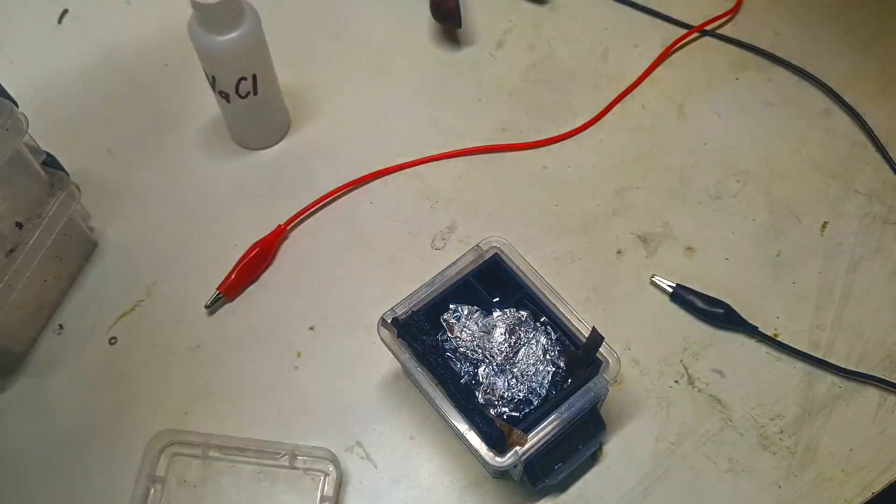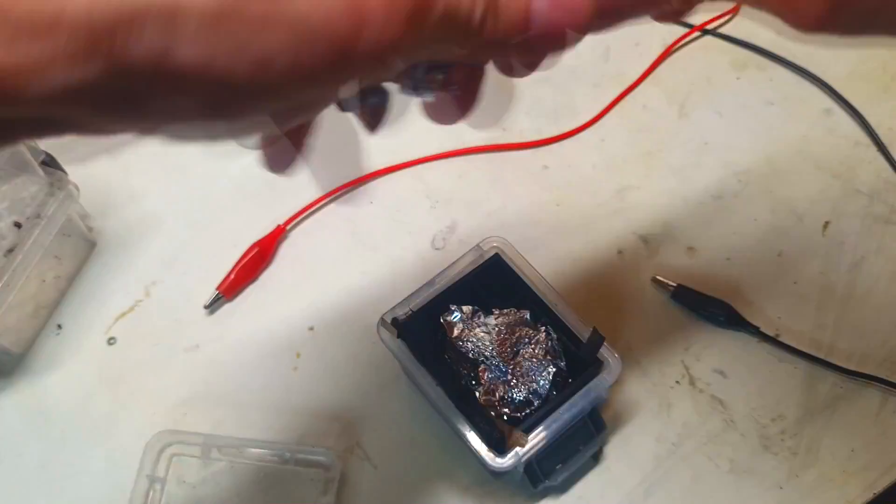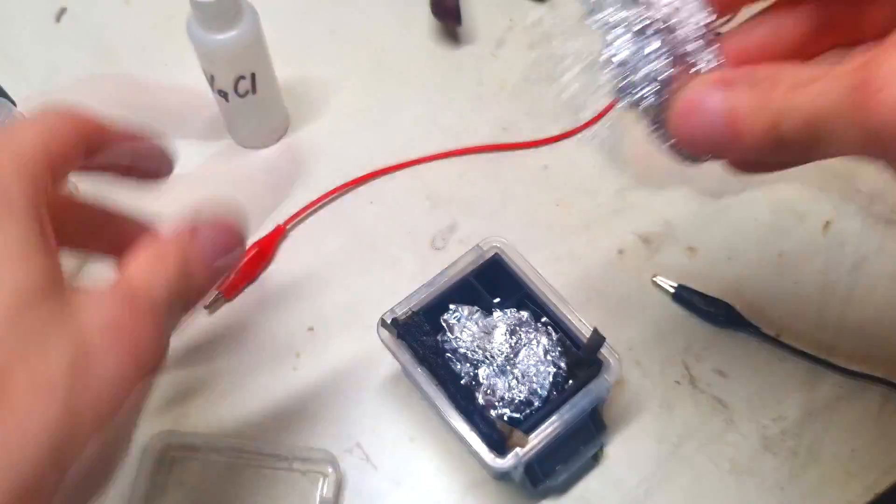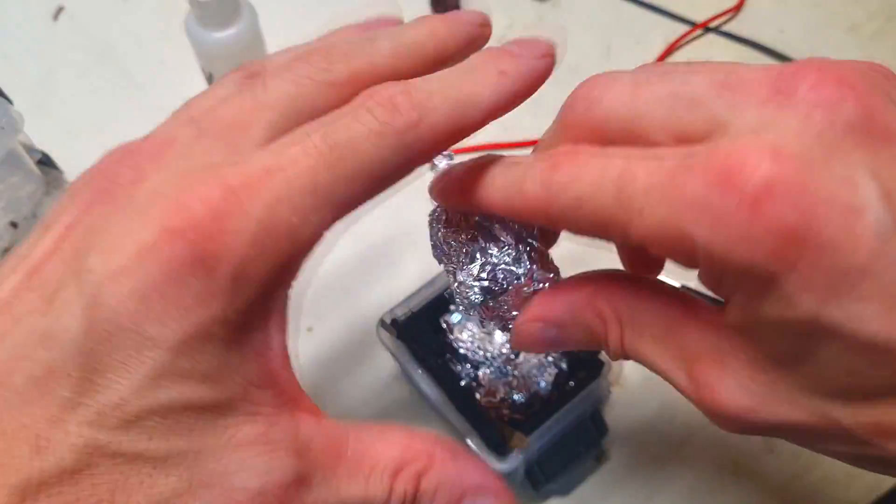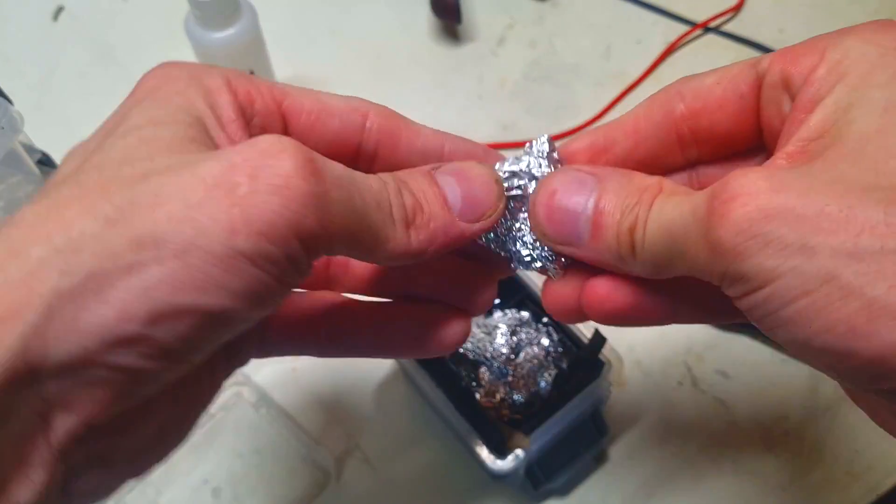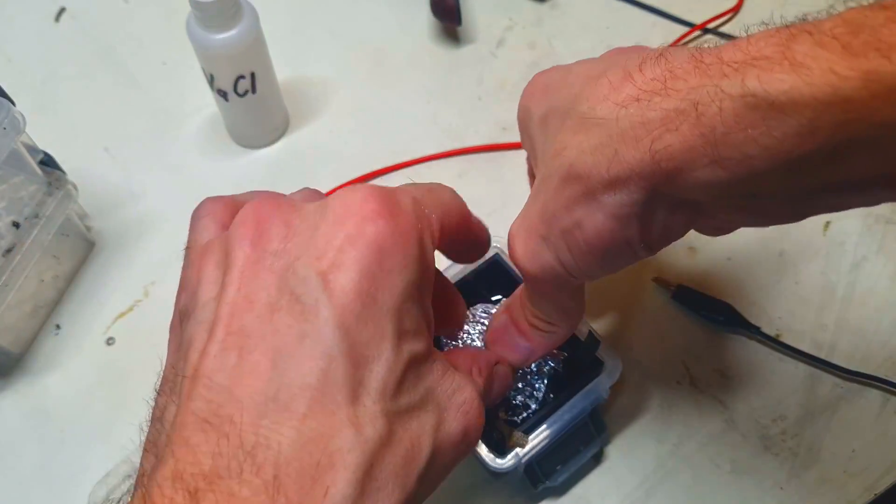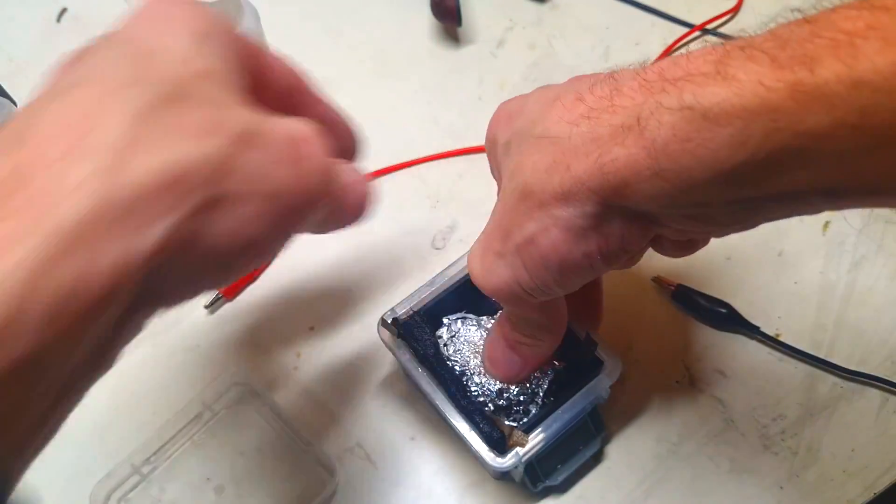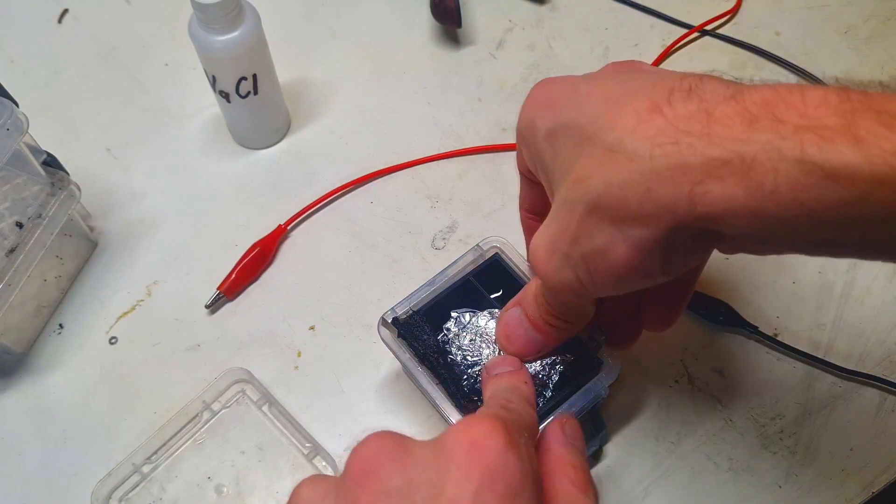And now I need actually so much aluminum that this lid will push down this aluminum foil to the current collector, to the negative current collector, to make better contact.